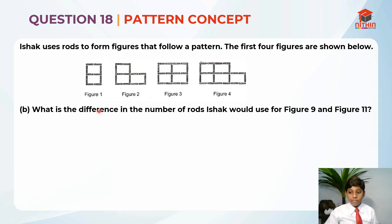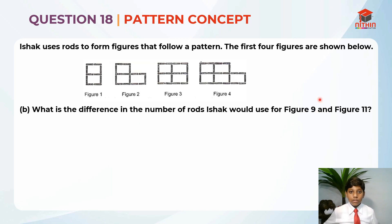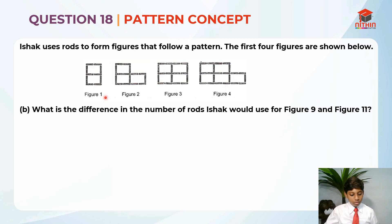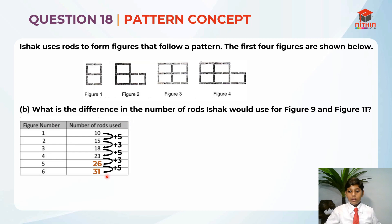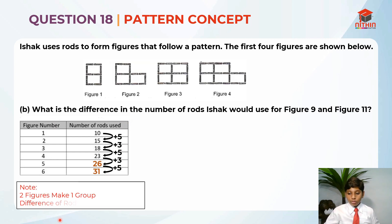So this is part B. They are asking: what is the difference in the number of rods Ishak would use for figure 9 and figure 11? We use the table again, and we should note that 2 figures make 1 group and the difference of rods in each group is 8.